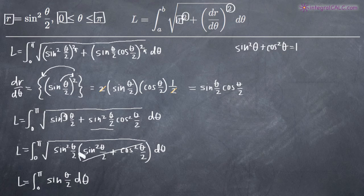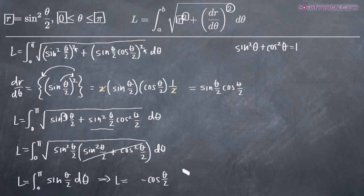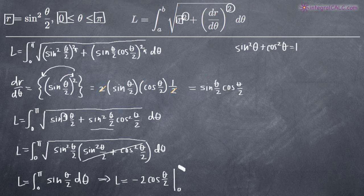Now we can evaluate the integral. The integral of sine is negative cosine, so we get negative cosine of theta over two. Because of the theta over two inside, chain rule tells us to divide by the derivative of theta over two, which is one half. Dividing by one half is the same as multiplying by two, so this becomes negative two cosine of theta over two, evaluated on the range zero to pi.